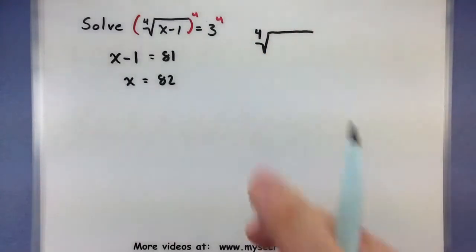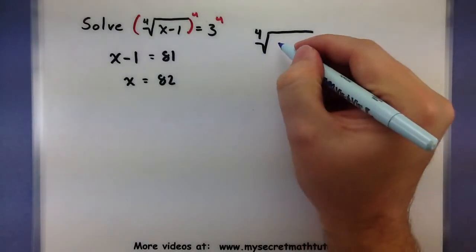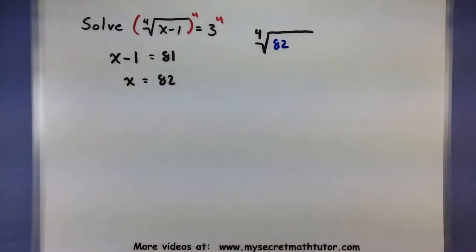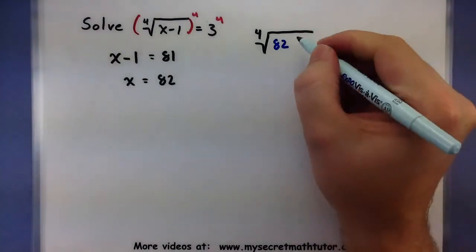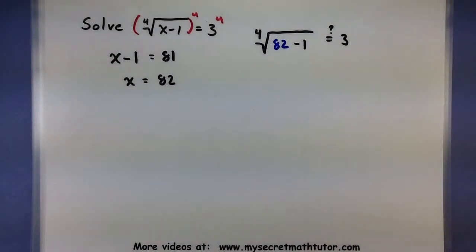Let's go ahead and make sure by plugging this back into the original and seeing that it all works out. So I have 82. We'll subtract 1. We want to check, does this thing really equal 3? So that was from our original.